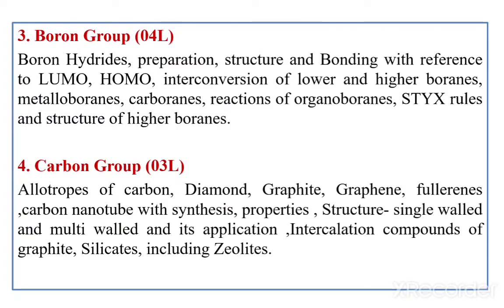Chapter 4: Carbon Group. Three lectures. Topics include allotropes of carbon: diamond, graphite, fullerene, and newly introduced graphene. Then carbon nanotubes — their synthesis, properties, classified into single-walled and multi-walled structures, and their applications. Then intercalation compounds of graphite, silicates including zeolites.